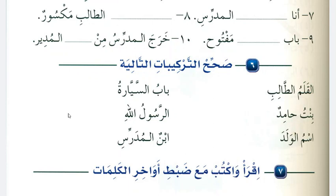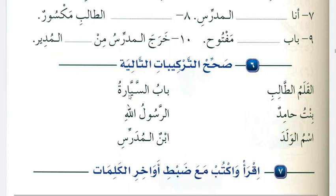صحّح التراكيب التالية — Correct the following structures. In all of them there is a grammatical mistake; find it and correct it. In the first one: القلم is مضاف and تلميذ is مضاف إليه, but with مضاف we cannot use ال, so remove ال from القلم — it becomes قلمُ تلميذٍ. Then: بابُ السيارةِ — مضاف إليه is always مجرور, so use kasra instead of dhamma. Again the same rule: use kasra instead of dhamma. In this way you will correct all these mistakes.